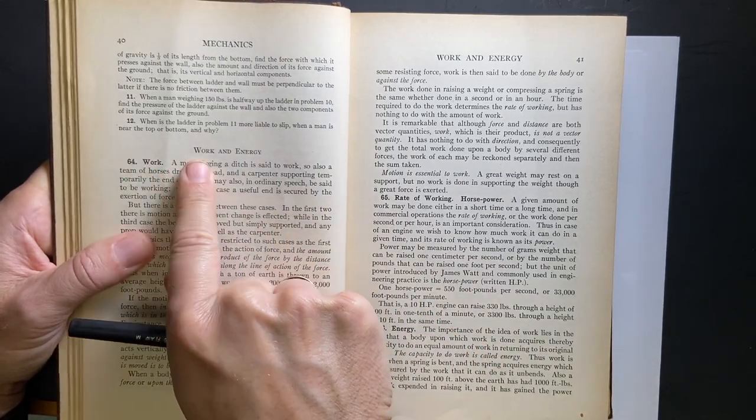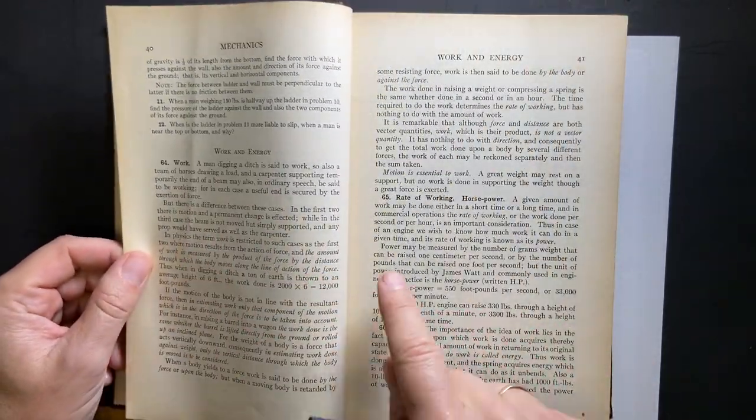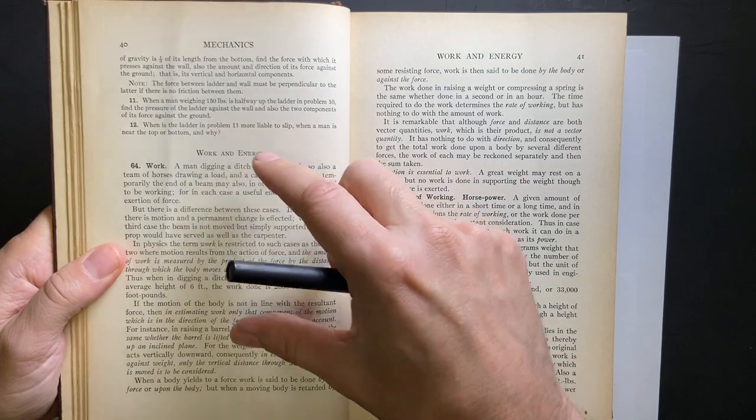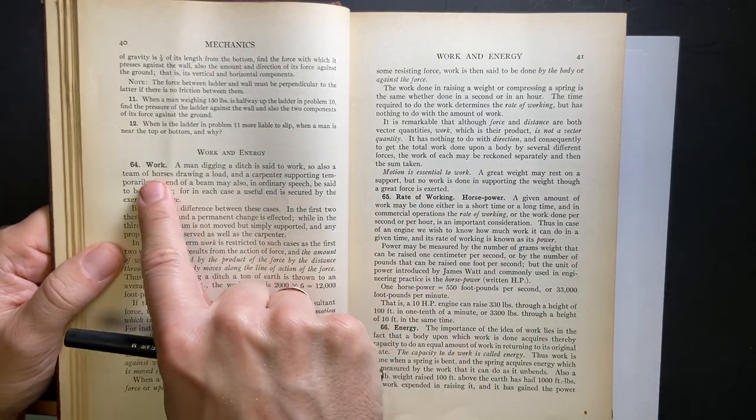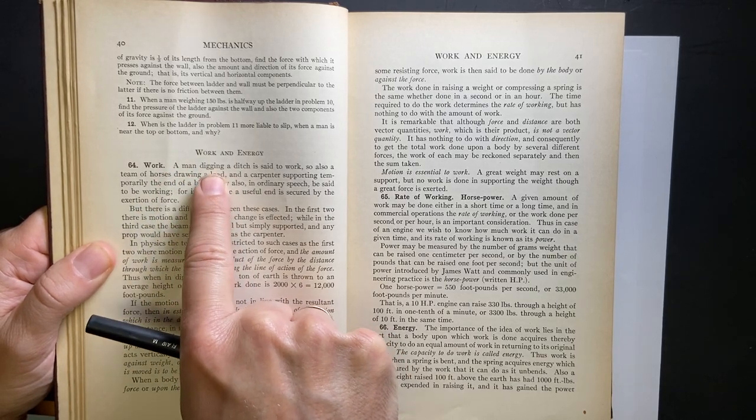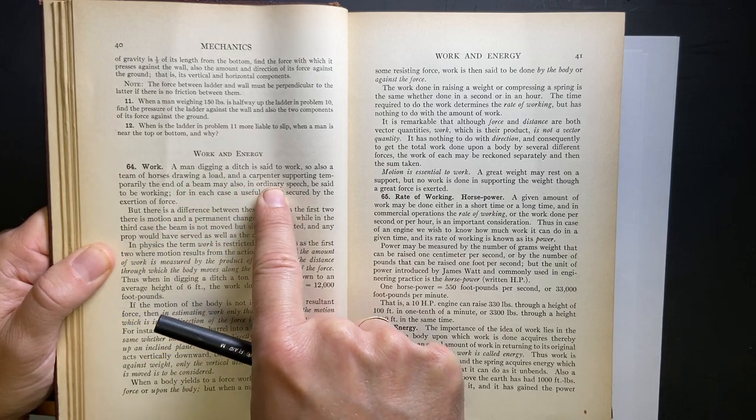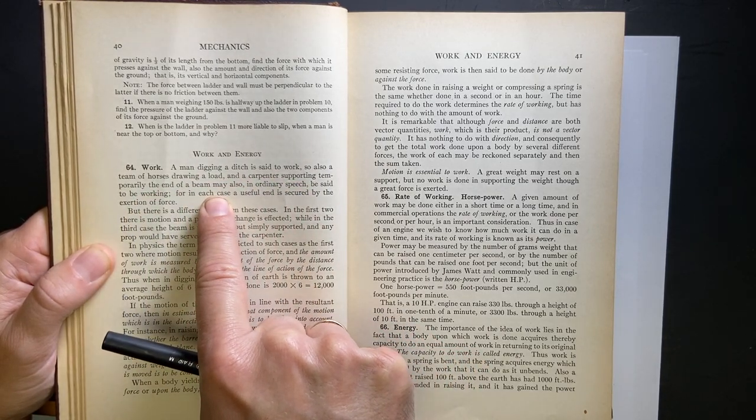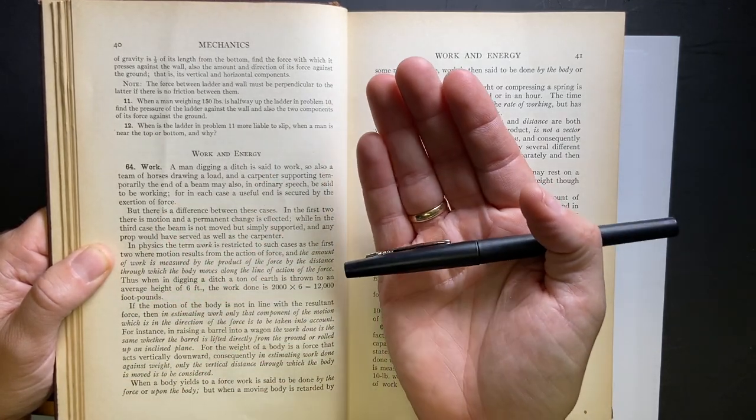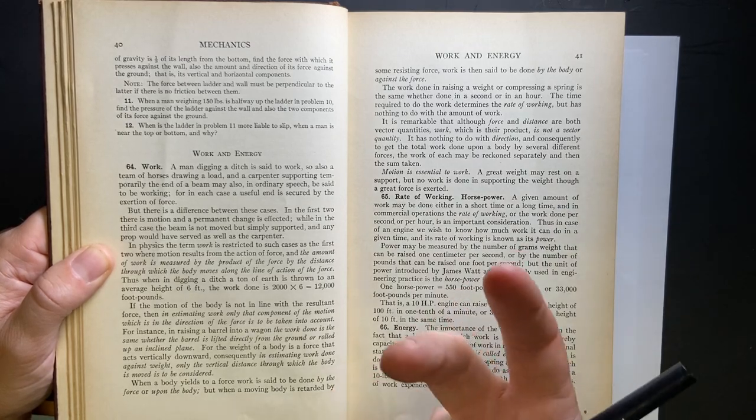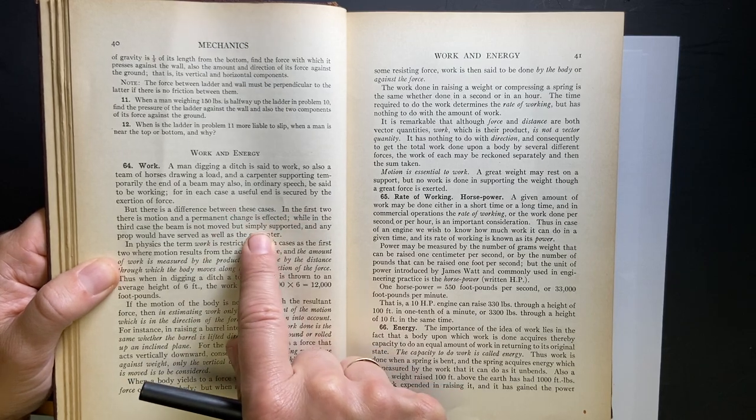And it's weird how this starts off. It's in this mechanics chapter, and it's just numbered into different cards. It's card 64, 65, and it's kind of weird. Work is first defined. It gives these two examples of a man digging a ditch, a horse drawing a load, and a carpenter supporting temporarily the end of a beam. May an ordinary speech be said to be working. So if you're just holding something and not moving, we would say that's work, right?